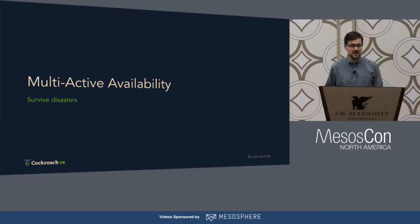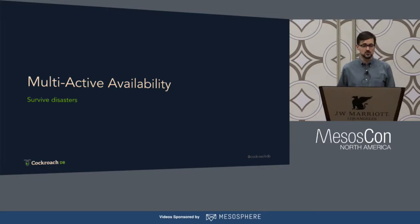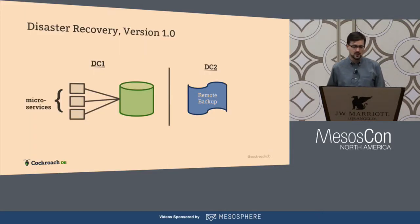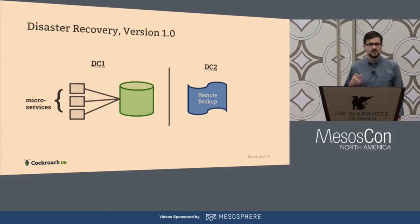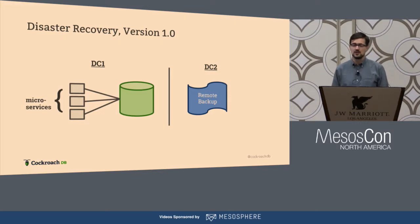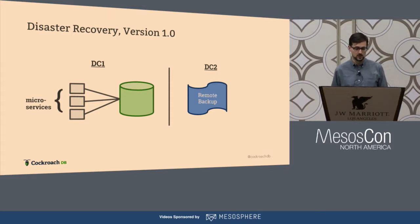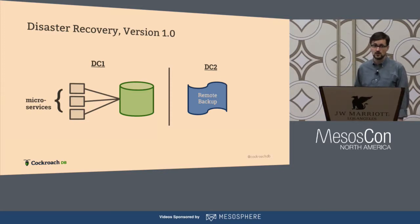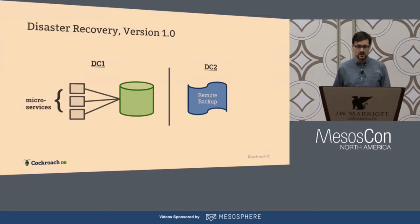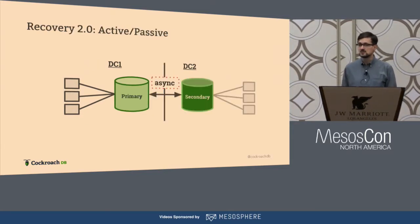Multi-active availability is the way that we provide to survive disasters. You can think of disaster recovery originally as being about backup and restore — you'd make a backup and store it remotely so that in the event of a data center outage you'd have something to recover from. Of course this was pretty painful because it was a very manual process and took a long time, so in the event of an outage you would have a lot of downtime.